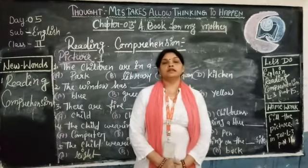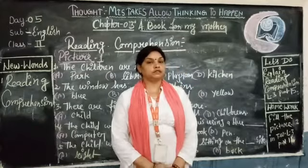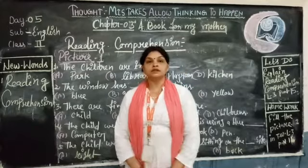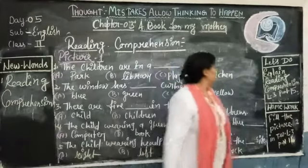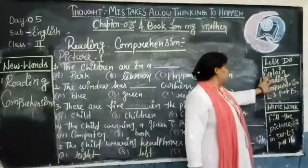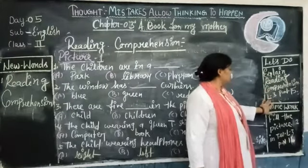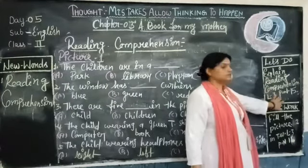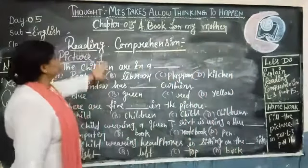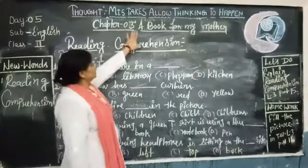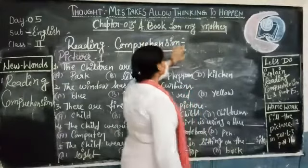Lesson number 3, picture number 3, reading position and picture number 2. Chapter number 3, page number 15 — a book for my mother.